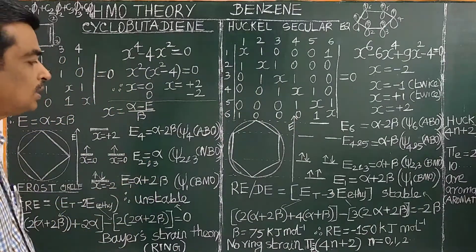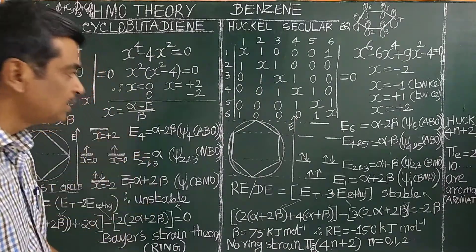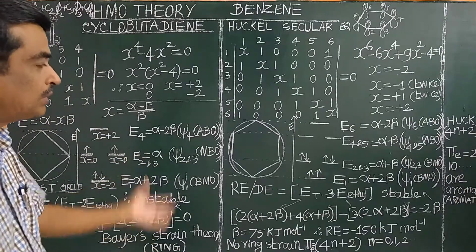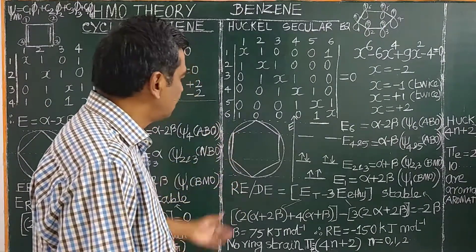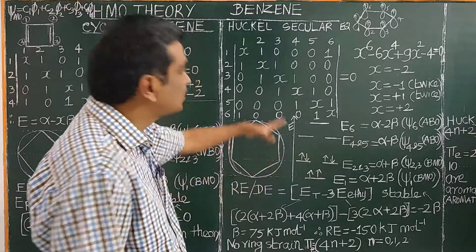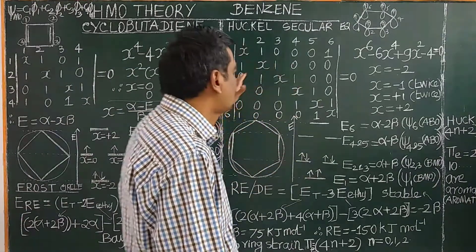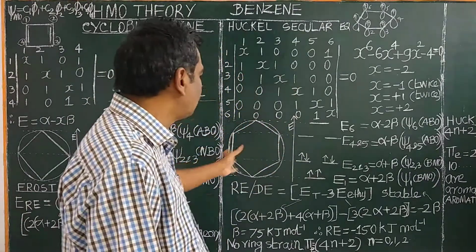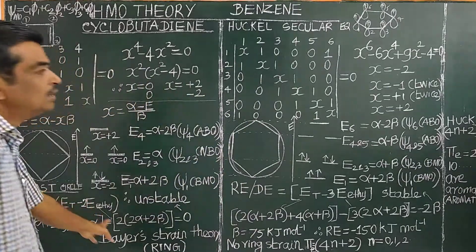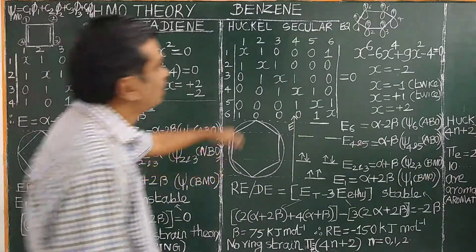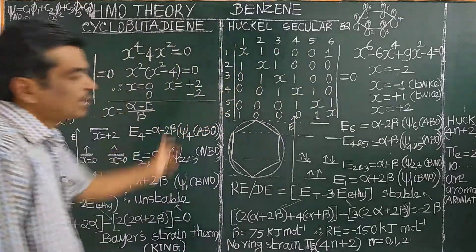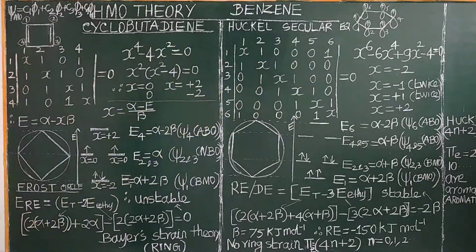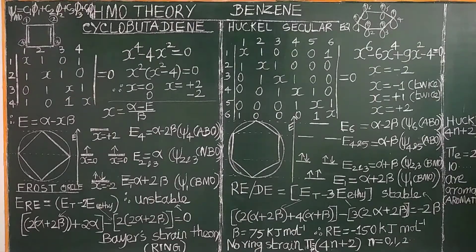It is often asked: what is the resonance energy for benzene, how to set up the Hückel secular equation, and how the various energy levels are obtained from the Frost circle method — which coincides with the mathematical solving method.